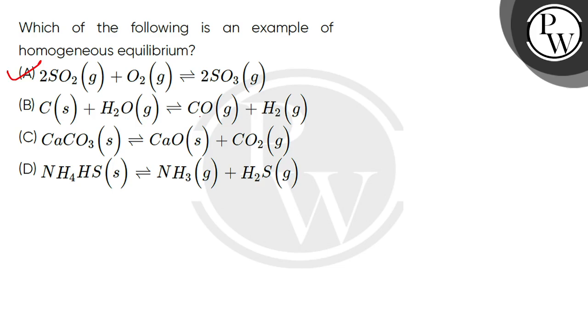But in option B, you have C solid plus H2O gas gives CO gas plus H2 gas. Here what you see is carbon is solid, but the other species are gases, so there are two different phases present - a solid and a gas. This is why this is a heterogeneous equilibrium.